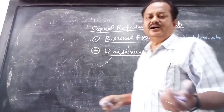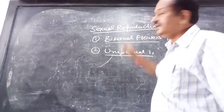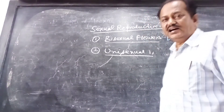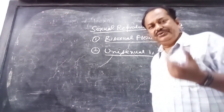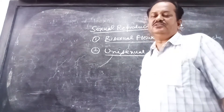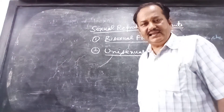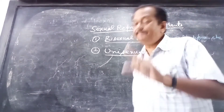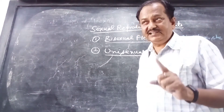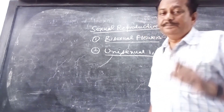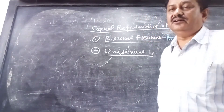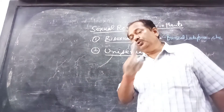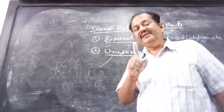Most of the plants bear bisexual flowers. Unisexual flowers are those flowers which have two different types of flowers on the same plant — they have male as well as female flowers on the same plant.